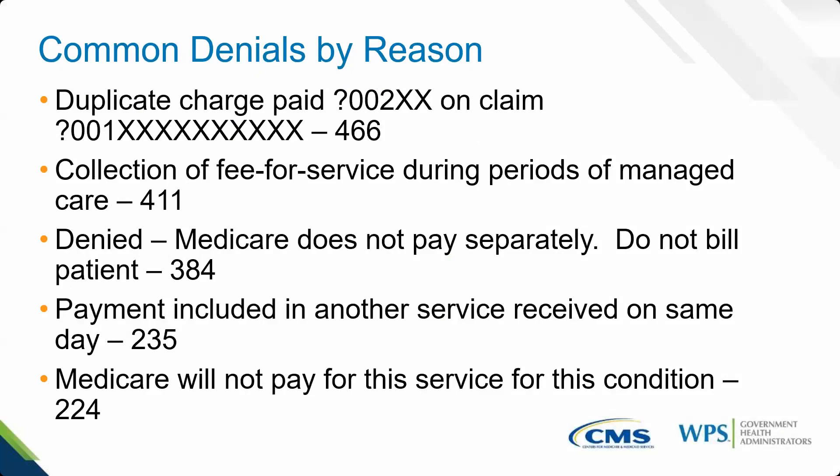I am doing a series of common rejections and denials, going by each particular two-digit specialty code and revealing those common rejections and denials and then talking about how you can fix them and where you can find more information. The duplicate charge denial — paid on a prior date on a specific claim — had 466 occurrences. When you continue to submit duplicate claims, it's considered abusive. You should not automatically submit claims to Medicare on a 30-day basis. If you're using a billing service who automatically submits claims every 30 or 60 days, you need to tell them to stop — it is considered abusive.